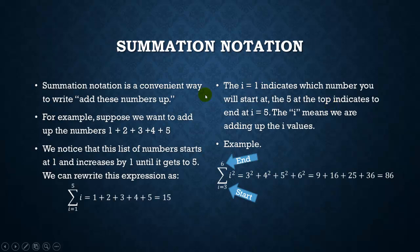The i at the bottom indicates where we're starting. i equals 1 means we're starting at 1. The 5 at the top means we're going to be ending at the number 5.